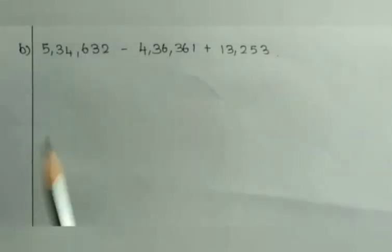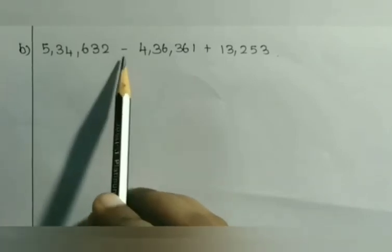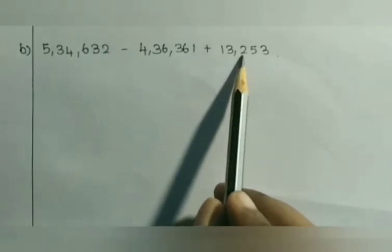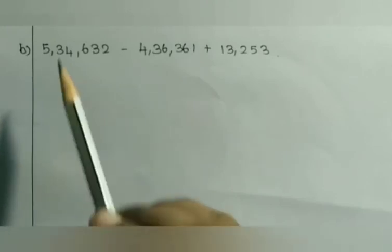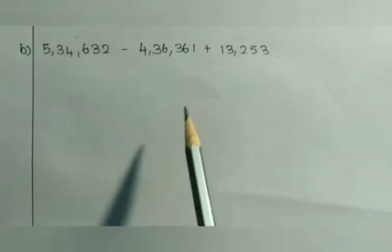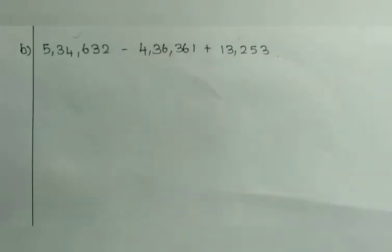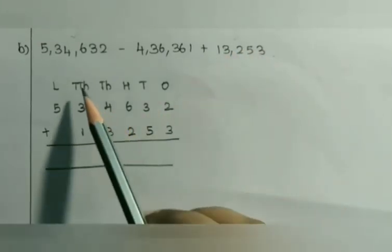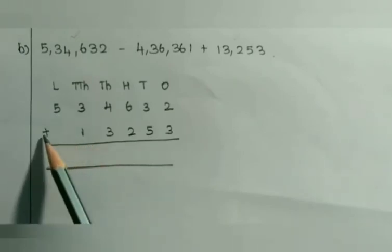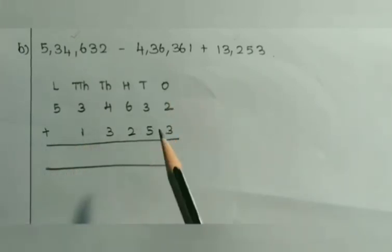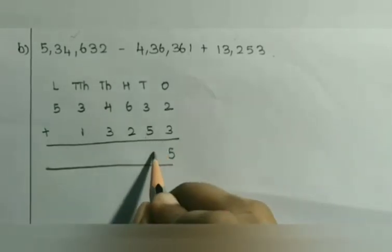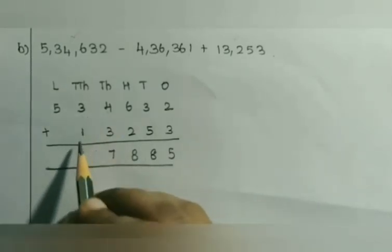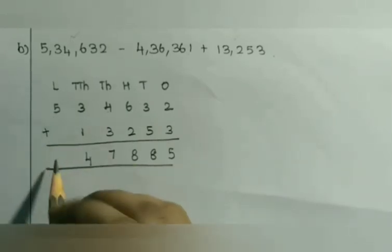Look at sum B: 34,632 minus 36,361 plus 13,253. So 36,361 is addend 1 and 13,253 is addend 2. This is a 5-digit number, so it will start from the 10,000's position. Let us add from the 1's position: 2 plus 3 is 5, 3 plus 5 is 8, 6 plus 2 is 8, 4 plus 3 is 7, 3 plus 1 is 4, and 5 plus 0 is 5.